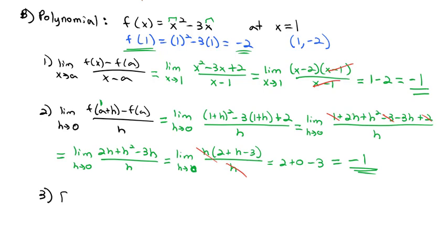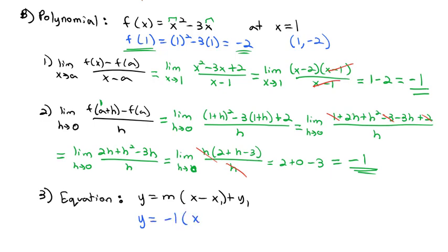Now that we know the slope, we can find the equation. The equation is y = m(x − x₁) + y₁. Plugging in the pieces: y = −1(x − 1) + (−2). That gives us the equation of our tangent line.